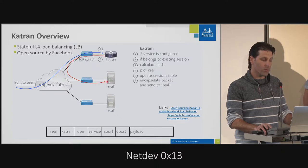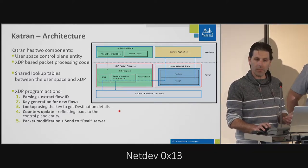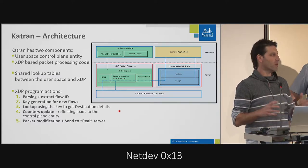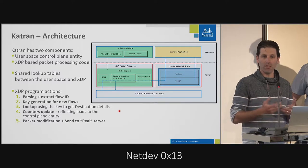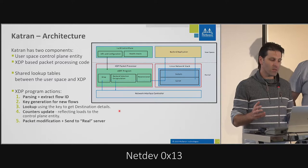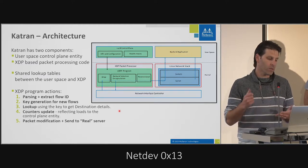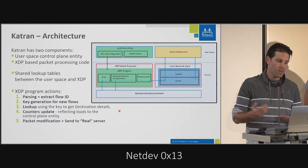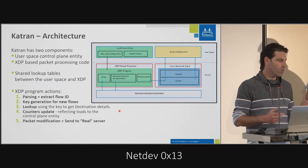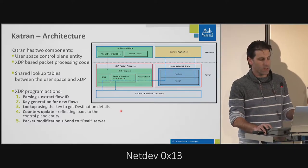We took Katran and added acceleration for it. Katran has two parts: a user space part and XDP-based packet processing code. These parts share tables where all the keys and virtual IPs are stored. The actions are: parsing, extracting the flow ID, generating a key for new flows, looking up the virtual IP in the database, updating statistics and counters, doing IP-in-IP encapsulation, and sending to the real server.